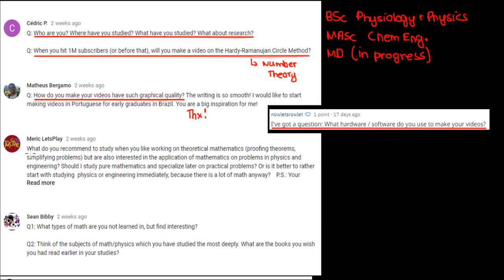Next question is from Merrick Let's Play, who asks, What do you recommend to study when you like working on theoretical mathematics, but are also interested in the application of mathematics on problems in physics and engineering? Should I study pure math and then specialize later on in practical problems? Or is it better to rather start with studying physics or engineering immediately because there's a lot of math anyway? Now this later part in the question cuts off, but it says P.S. your explanations are well structured and helpful. Thanks for giving us this amazing content. First of all, thank you. I appreciate the kind words. And secondly, what would I recommend? Okay, so you say that you like theoretical math, but are also interested in applications. So my advice would be to go with your second option, with studying engineering or physics, mainly because that gives you more career flexibility. And if you really do love pure math, then you could do a double major with math as your second major.